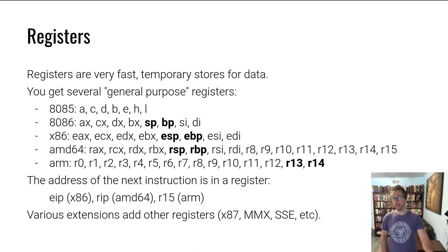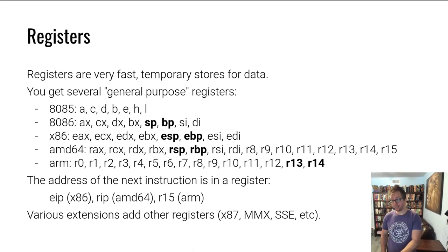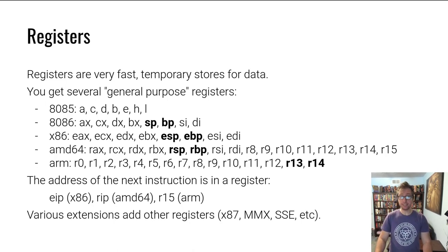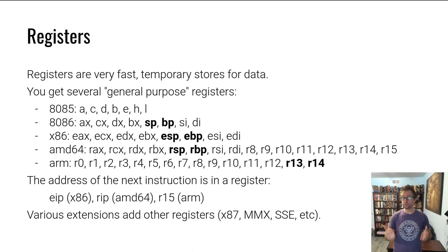You went from register A to register AX — 'A extended'. Then x86 came around and extended it further to 32-bit, so you went from AX to EAX — 'extended A extended'. Then AMD took Intel's architecture and added another 32 bits, creating AMD64. They also extended the number of registers altogether, giving you RAX — 'really extended A'. ARM also has a lot of registers with similar concepts, as do other architectures like MIPS.